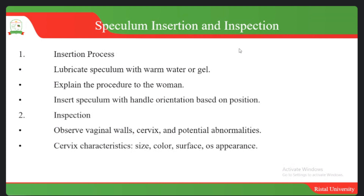For inspection, observe the vaginal walls, then observe the cervix and note any potential abnormalities. For cervical characteristics, look at the size, color, surface, and overall appearance of the cervix. Women who have never given birth have a circular cervical os, while women who have given birth have a slit-like os — so by looking at the cervix, you can tell whether someone has ever delivered.